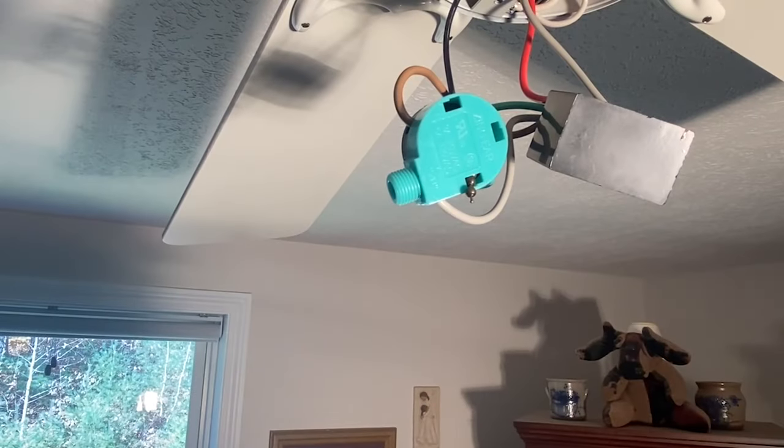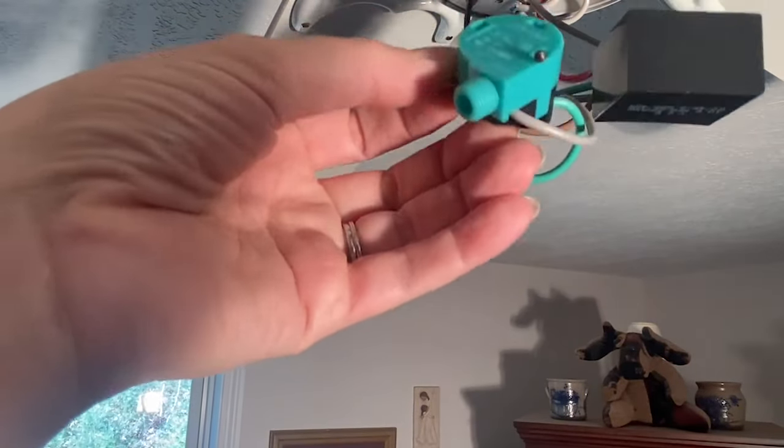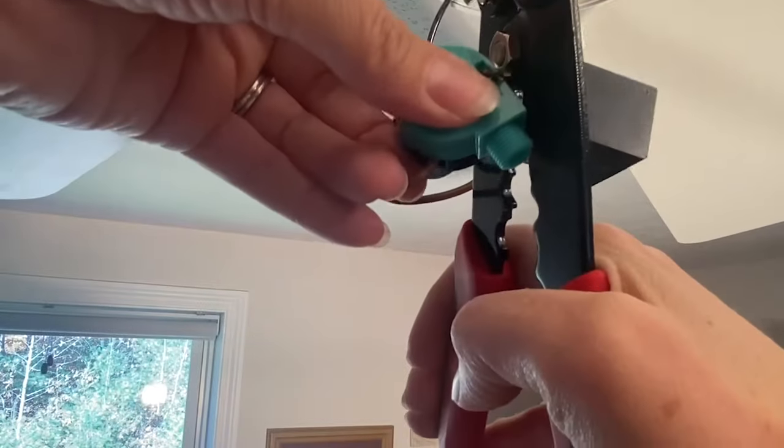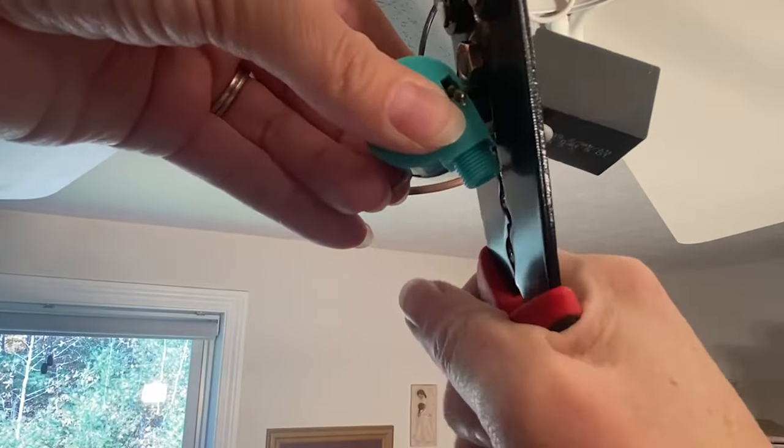Okay, so now we have the pull chain switch exposed and you can see where the chain broke off right there. So what we're going to do is cut these wires off at the base.